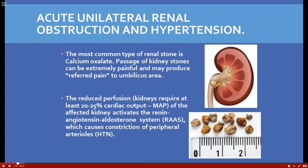The most common type of renal stone is calcium oxalate. Passage of kidney stones through the ureter and urethra is very painful. We call that referred pain to the umbilicus, because the ureter arises from the 10th thoracic nerve root, causing pain to be felt around the umbilicus.